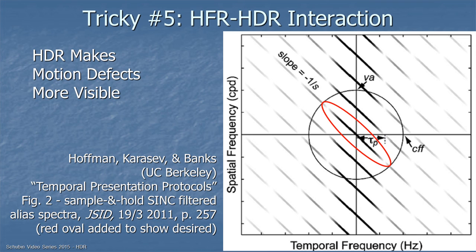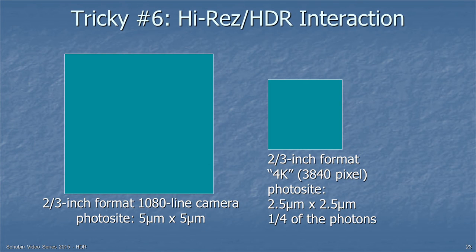Tricky issue number five is the interaction between high frame rates and high dynamic range — HDR makes motion defects more visible. Tricky issue number six is the interaction between high dynamic range and high resolution. A two-thirds-inch HD camera has photo sites of 5 microns by 5 microns. Converting the same imager to 4K resolution means each photo site has only a quarter of the area and can capture only a quarter of the photons. This can be dealt with through processing, but it's not commonly addressed yet.